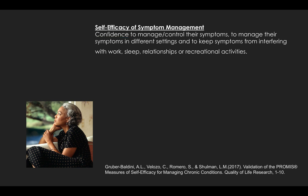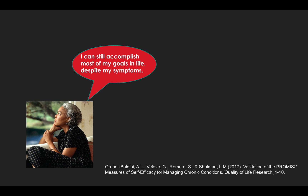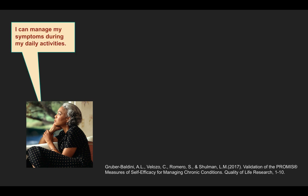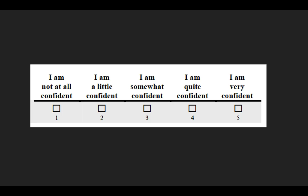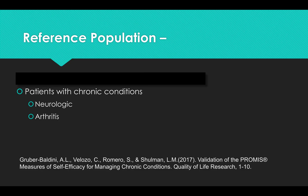Here are some items from the item bank: 'I can still accomplish most of my life goals despite my symptoms.' 'I can manage my symptoms during my daily activities.' 'I know what to do when my symptoms worsen.' Patients are asked to rank their confidence in these statements, and that determines the T-score. Importantly, all patients must have symptoms for this scale to be relevant.